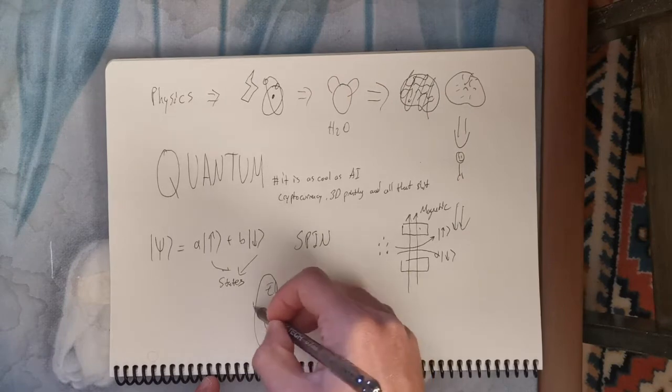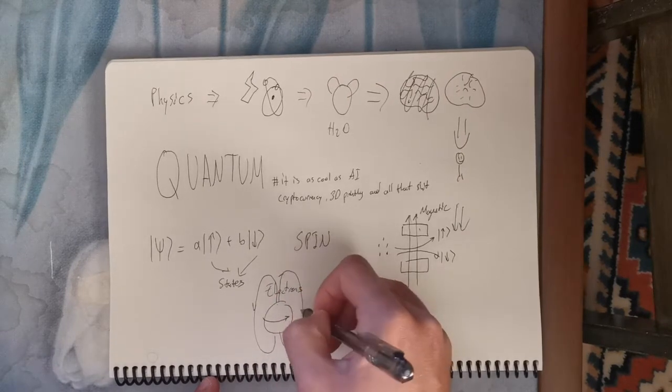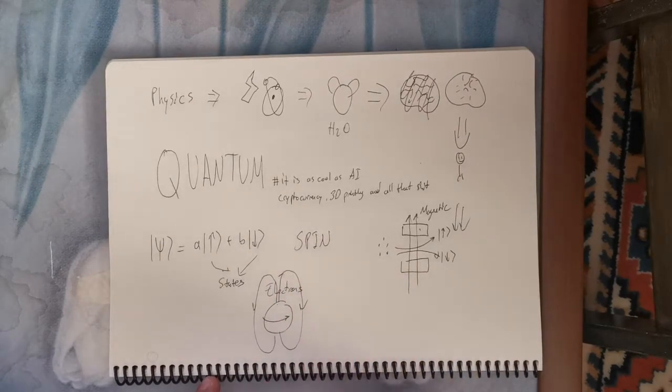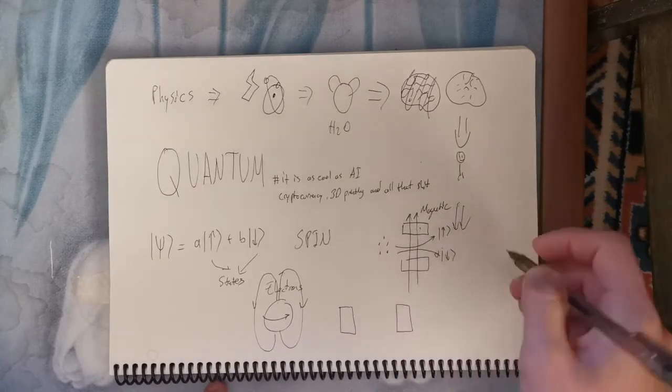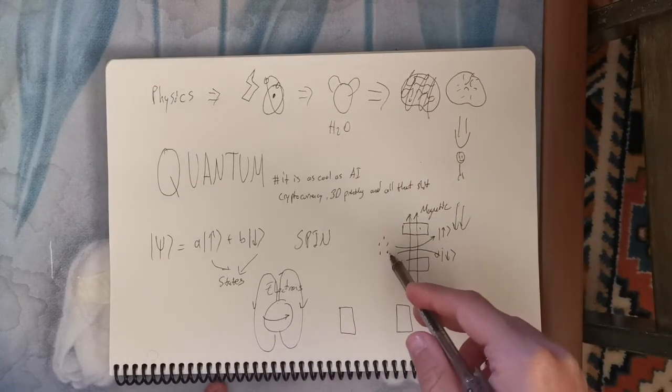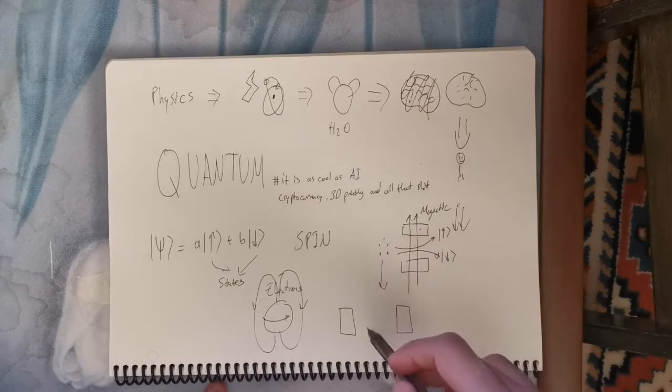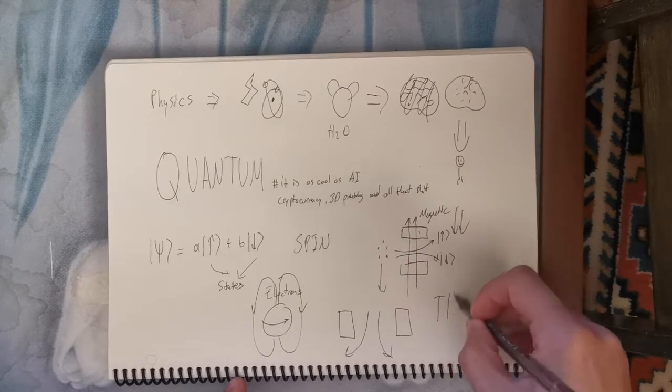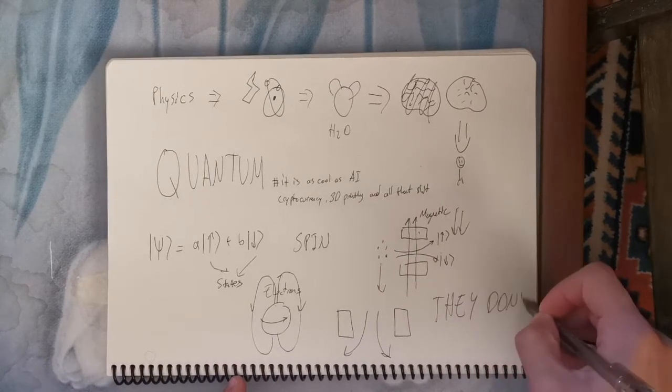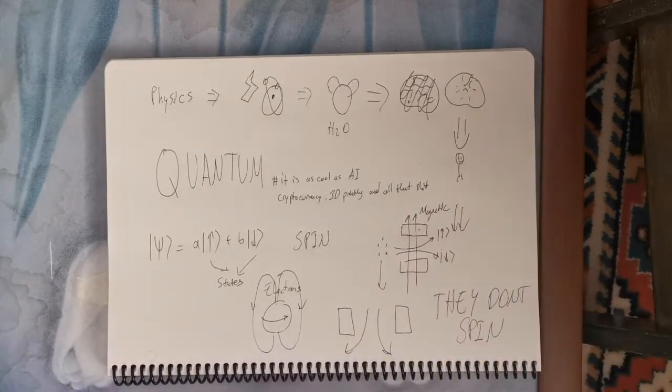So the guy makes the same experiment, but this time, he changes the magnetic field direction. So his hypothesis would be like them going straight. But he found out that electrons just went toward the magnetic field, half of them, and the other half went to the opposite way. So they don't actually spin.